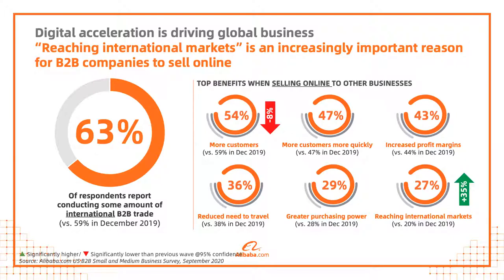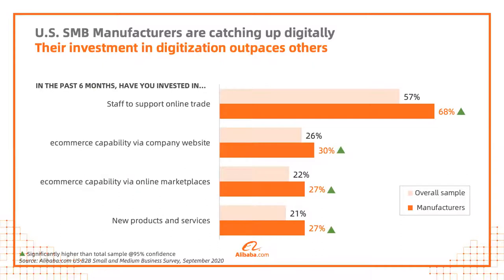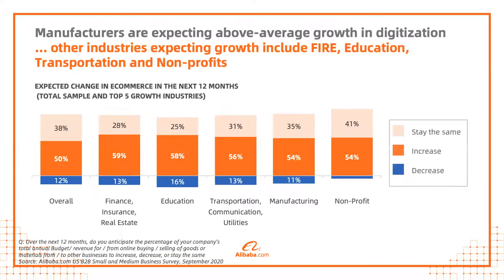With respect to globalization, 63% of the businesses surveyed cited reaching international markets as a goal, largely due to supply chain disruptions. We found that U.S. small manufacturers were digitizing at twice the rate of other industries during the pandemic. B2B manufacturing is more of a traditional analog business, but COVID-19 really accelerated their digitization journey. Their investment in these technologies is outpacing other industries, and they're seeing more upside to that growth.